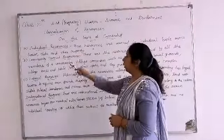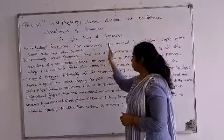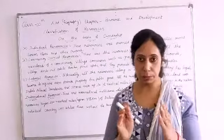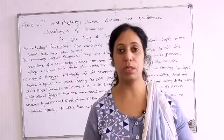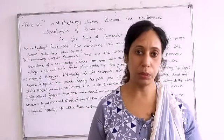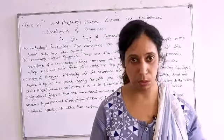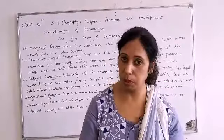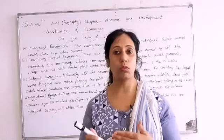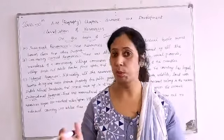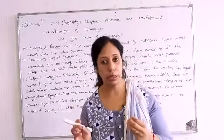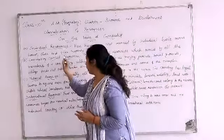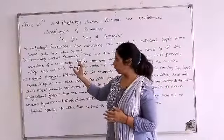First is individual resources. These resources are owned by individuals — one person has the right over these resources. These are called individual resources. For example, your vehicle, your own house, your own plot — these are yours and your neighbor has no right over them. So these are individual resources. For example, people own houses, plots and other property.